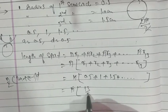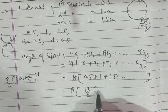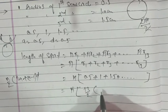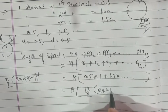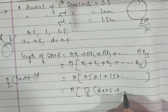13 upon 2. 2a, a is 0.5. So, 2 into 0.5 plus n minus 1, 13 minus 1 is 12, into d.